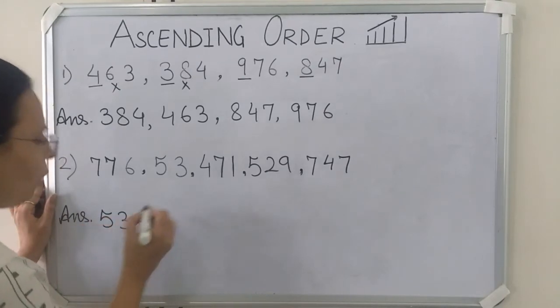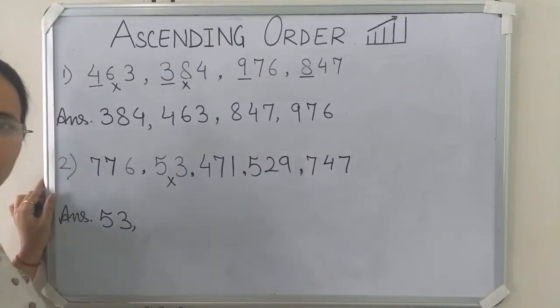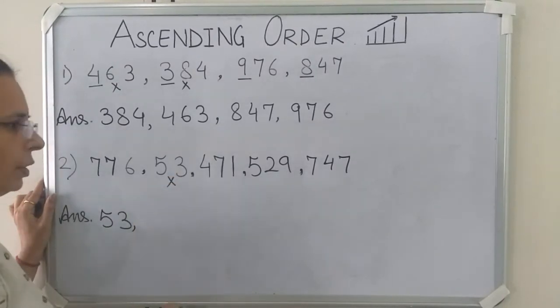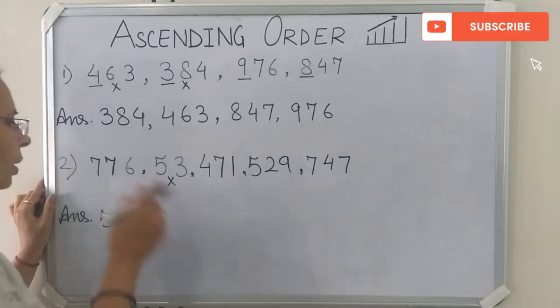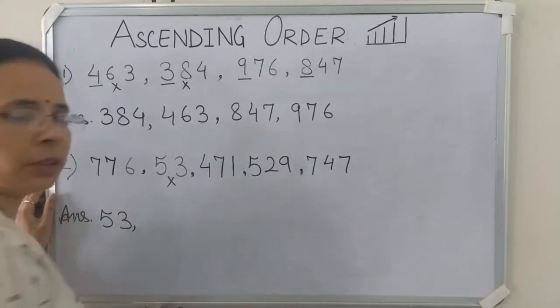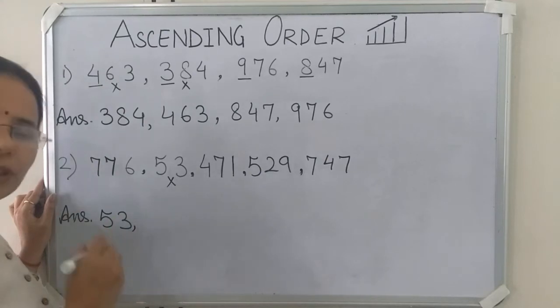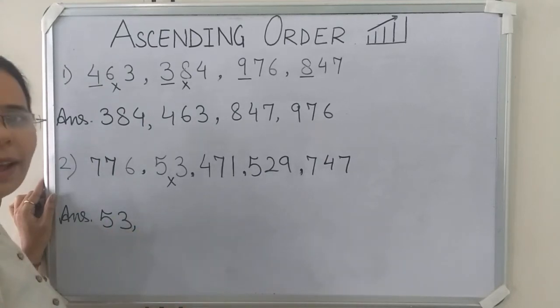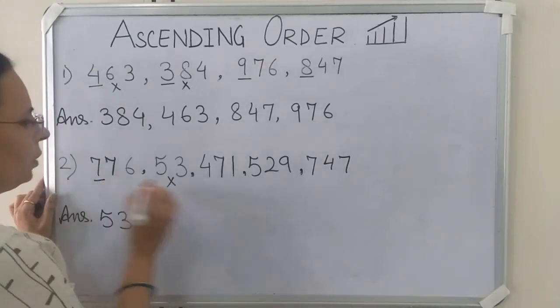Now we have written 53, so we will cut it. Now we have to find the smallest number among these 4 remaining numbers. First we will underline the hundreds place number.